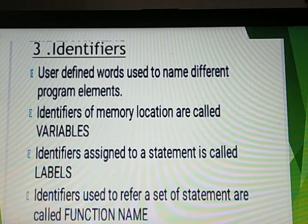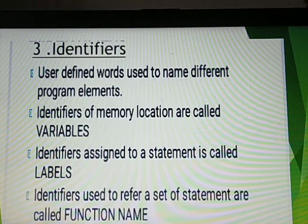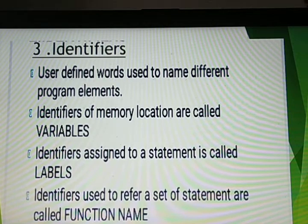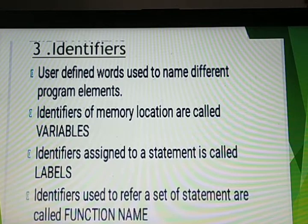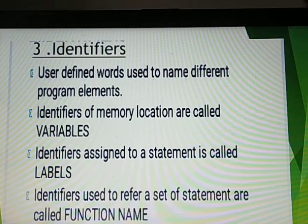Next we are going to study the third type of token: identifiers. Identifiers are user-defined words that are given to a program element. An element can be a variable, a label, or a function name. This year we are mainly going to study about memory locations, that is, variable names — user-defined words given to a memory location.